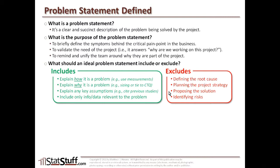Also exclude proposing the solution. If you already know the solution, you don't need Lean or Six Sigma — just implement it using normal project management tools. But chances are we don't know what the solution is, so don't include it in the problem statement. Additionally, if there are any risks involved, it's important to know and identify them, but don't do it in a problem statement. Let those risks be addressed in a separate notation within the project charter or elsewhere in the project.